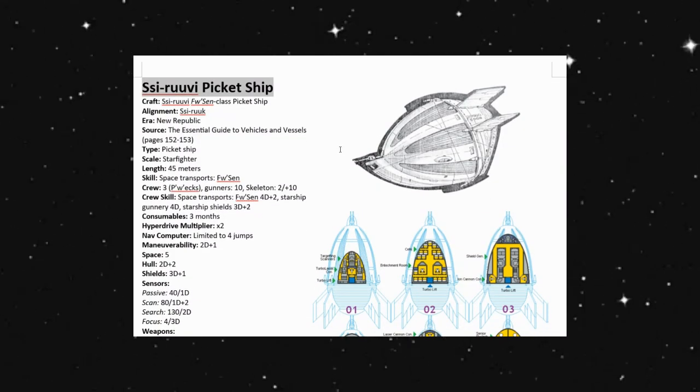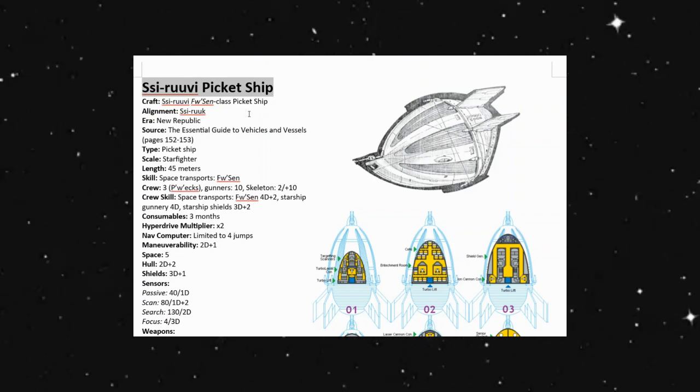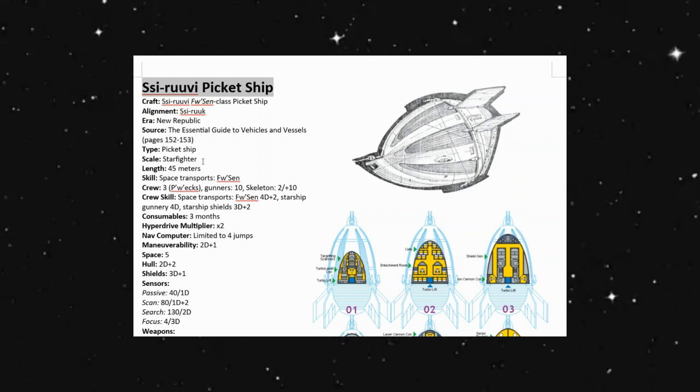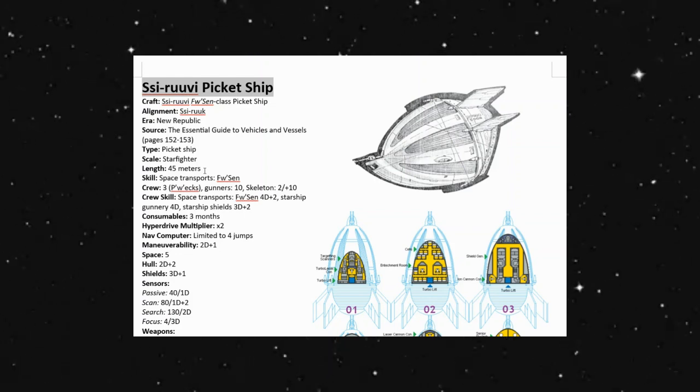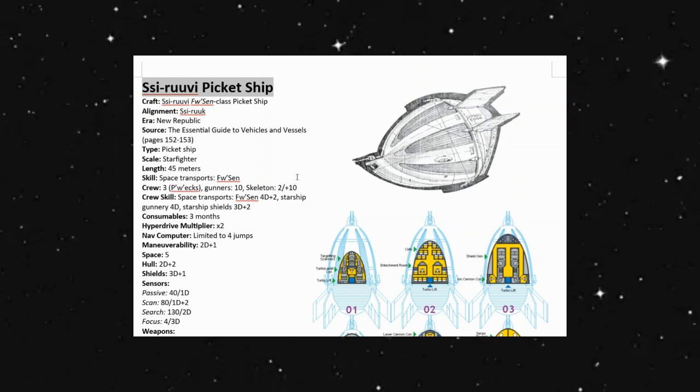Alright, now that we look at it in our spreadsheet here. Cisroviki Picket Ship is what we're, the Cisro-Fru-Sheen class picket ship and yeah it is still a mouthful. This is at Starfighter scale. Our book here lists it at 45 meters long, has a crew of three and gunners of ten. Skeleton can be done with just two people with a plus ten to our difficulty.